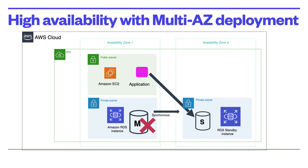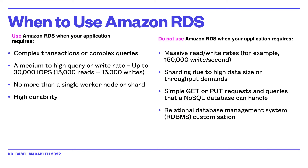It is very important to understand when we need to use and when we don't need to use RDS. You use Amazon RDS when your application requires complex transactions or complex queries — dealing with structured query language in a relational database system where there is a relationship between entities. When you have a medium to high query or write rate up to 30,000 IOPS (15,000 reads plus 15,000 writes), and when you have more than one single worker node or shard, or when high availability is a must in your application.